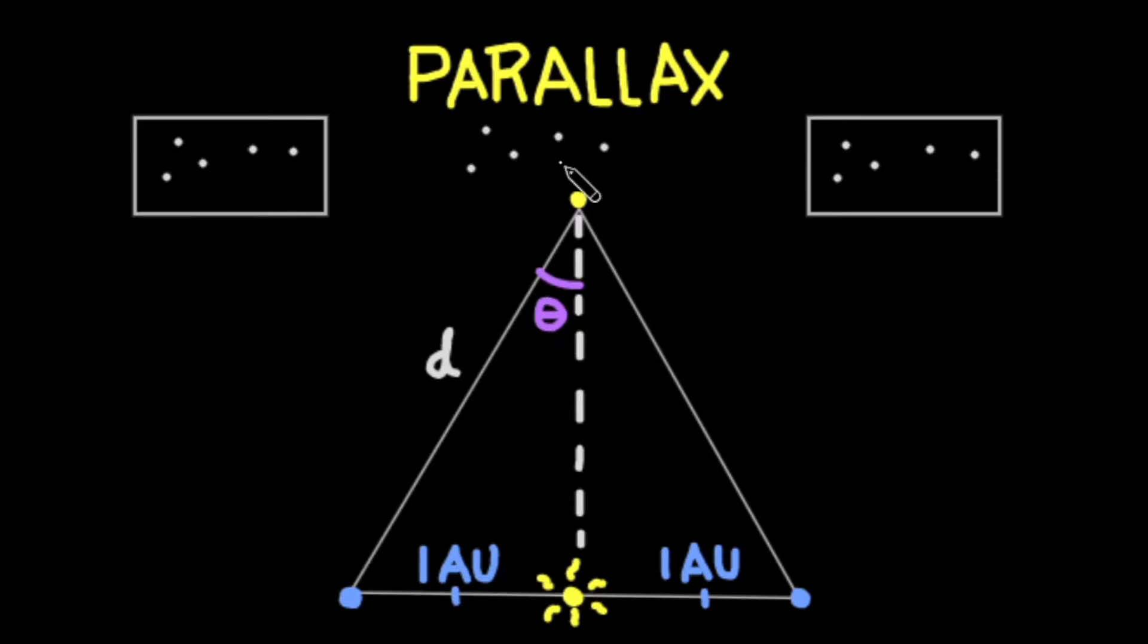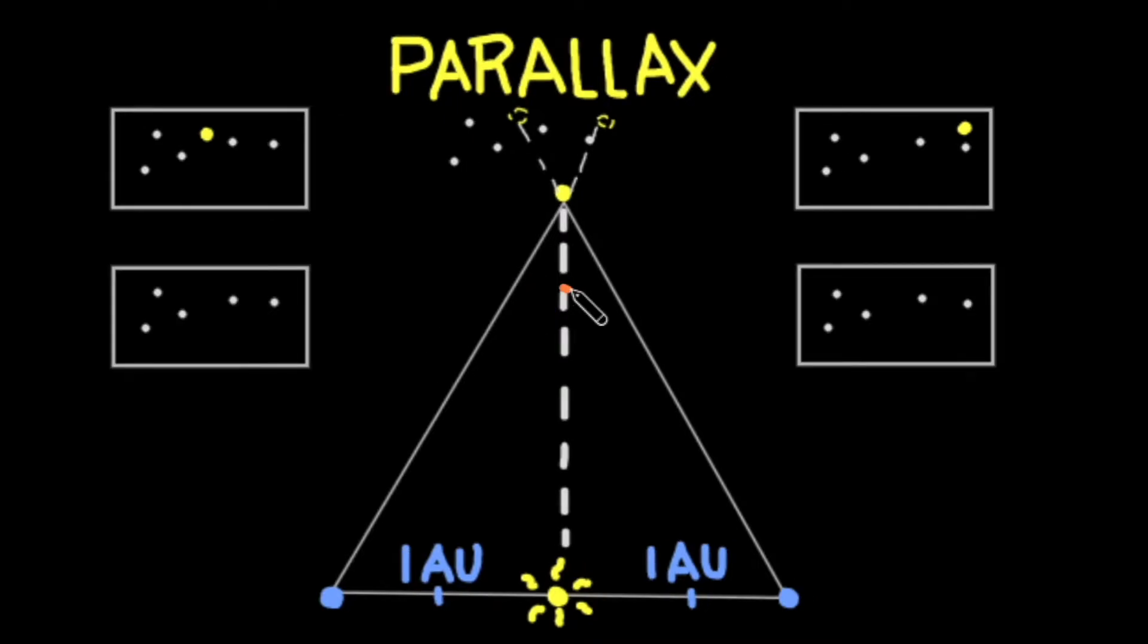We take advantage of these angles and the known distance between the Earth and the Sun, 1AU, which is short for astronomical unit, to determine the distance to the star.